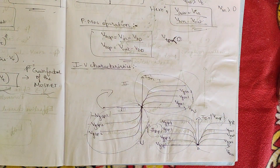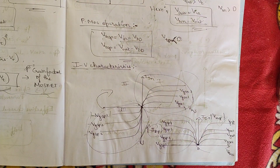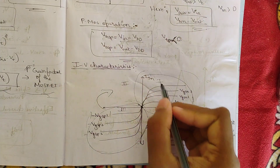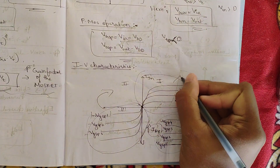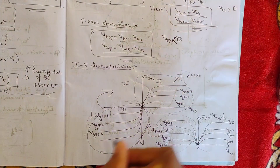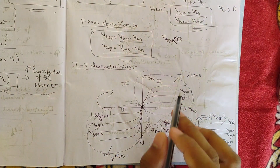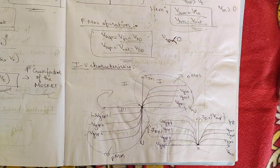Now let us look at the IV characteristic plot of the inverter. To plot the VI characteristics, we need the individual characteristic plots of both NMOS and PMOS. I have drawn a four-quadrant graph: the first quadrant represents the NMOS device and the third quadrant represents the PMOS device.